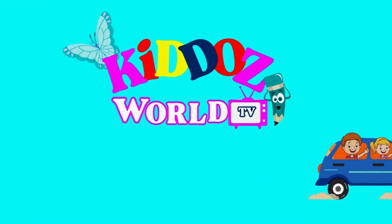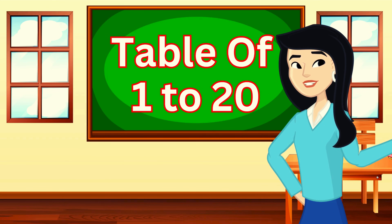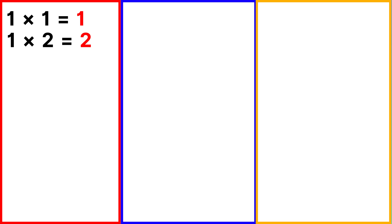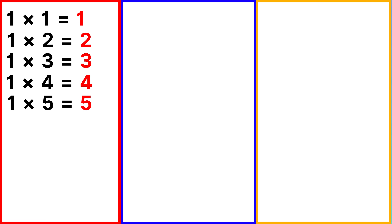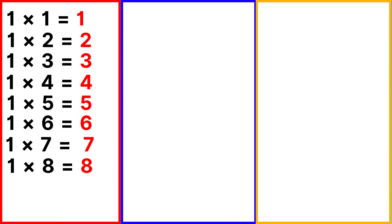You are watching Kiddos World TV. Table of 1: 1 one is 1, 1 two is 2, 1 three is 3, 1 four is 4, 1 five is 5, 1 six is 6, 1 seven is 7, 1 eight is 8, 1 nine is 9, 1 ten is 10.